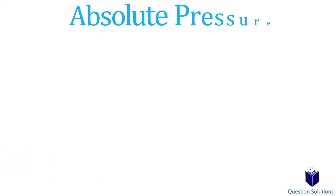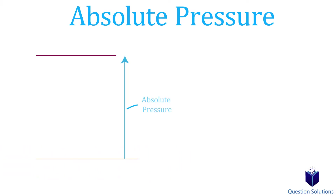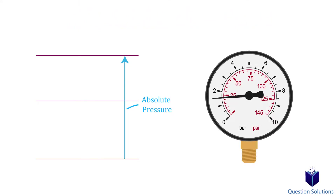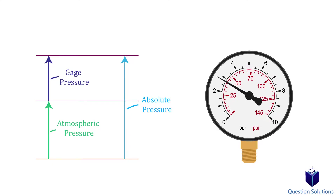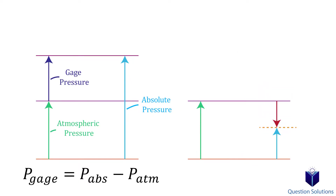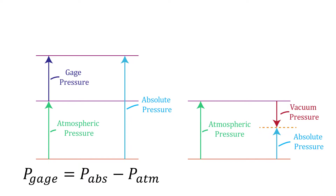Usually you will hear something called the absolute pressure — that's the actual pressure at a given position. We also use pressure measuring devices, and they have a gauge that shows the difference between the absolute pressure and the local atmospheric pressure. That difference is called gauge pressure. When we have pressures below atmospheric pressure, it's called vacuum pressure, measured by vacuum gauges, and it tells the difference between atmospheric pressure and absolute pressure.